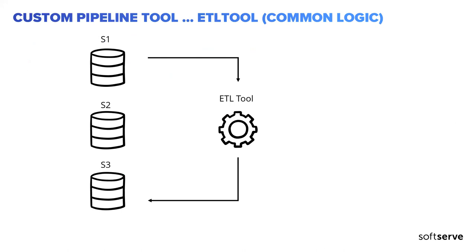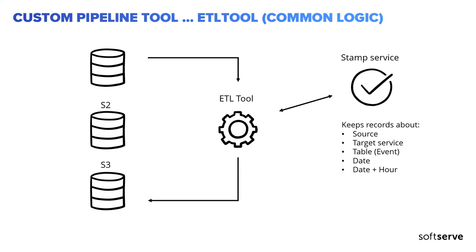First, we need to manage our data, and to do that we built a custom ETL tool. This tool allows us to move our data between our data storages while transforming and processing during the transfer. To this we then added a stamp service. The stamp service keeps records about source, target services, table, date, date-and-hour, initiator, and other metadata. The goal is to be able to use the stamp service to instantly check what data is available without making a request to the database itself.